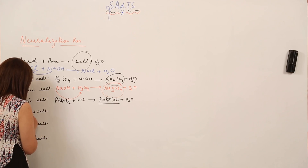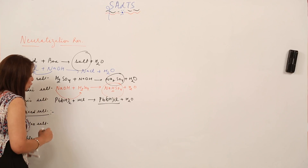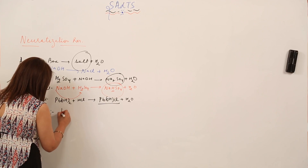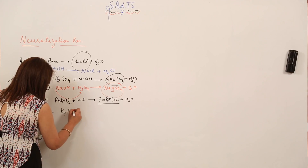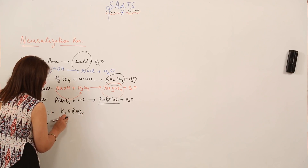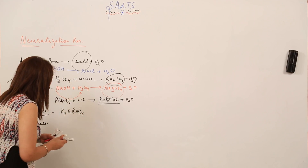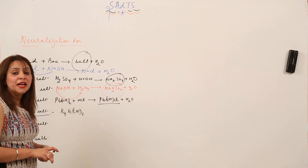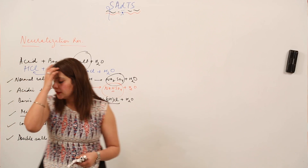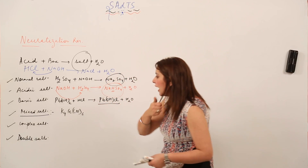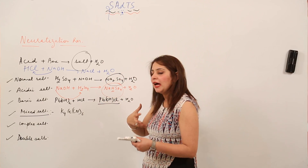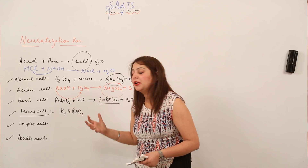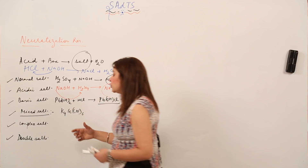Mixed salt — for example, K4Fe(CN)6, that is potassium ferrocyanide. What you see in this salt is that it has more than one kind of anion and a cation in it. That means it is a mixed salt.